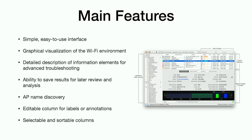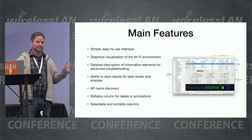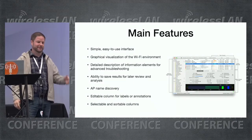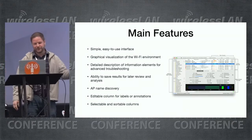One feature users like a lot is the Advanced Details tab. It gives you full details on the beacons and the information elements, so you don't have to do a capture to get that information — it's right there. You can save the results. It has AP name discovery for APs that support it — Cisco, Aruba — and one column you can use for annotations, to add labels like 'this AP is in the main office' or 'conference room.'